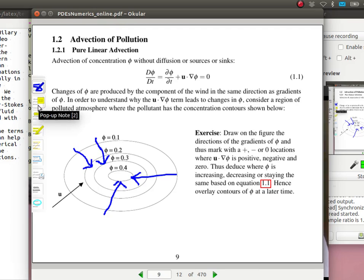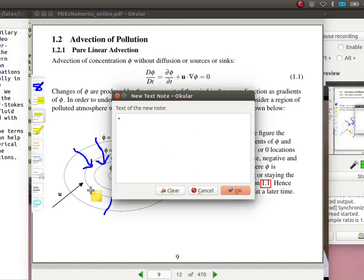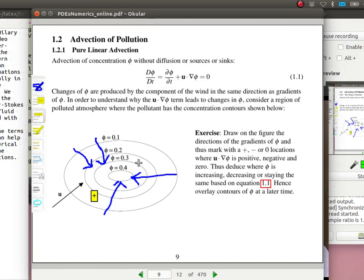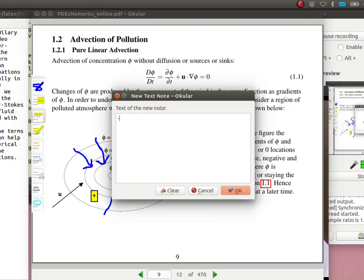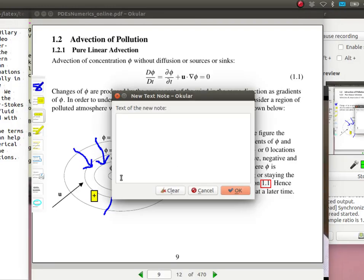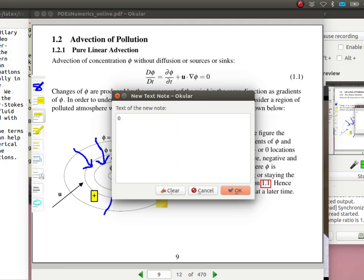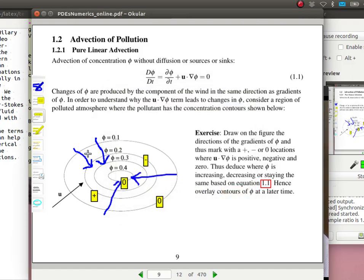And so U dot grad phi is positive where U and grad phi are in the same direction. So I'm going to mark on where it's positive. So U dot grad phi is going to be positive here. And the grad phi over here is that direction, which is in the opposite direction to U. So grad phi is going to be negative there. And along a line like this, where grad phi is perpendicular to U, U dot grad phi will be zero. So U dot grad phi will be zero here, here, and here, and up here.